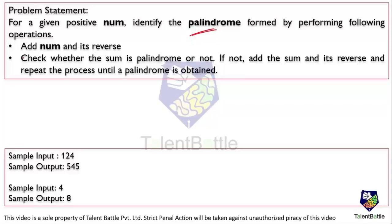The first operation is: add the number and its reverse. You have to add the current number and the reverse of that number, and after that you will check whether the sum is a palindrome or not. If the sum is not a palindrome, then you have to add the sum and its reverse and repeat the process until you get a palindrome.